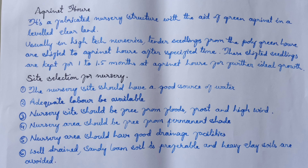The Agrinet House is a fabricated nursery structure with the aid of green agri-net on a leveled, clear land. In high-tech nurseries, tender seedlings from the polygreen house are shifted to the agrinet house after a specified time and kept there for 1 to 1.5 months for further ideal growth.